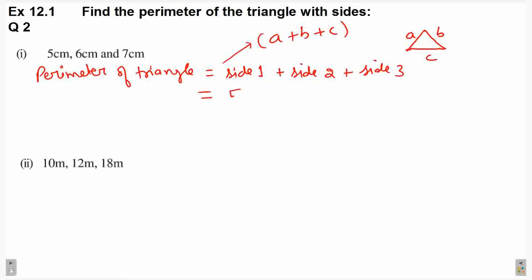Side 1 is 5, side 2 is 6, side 3 is 7. This is equal to 5 plus 6, 11 plus 7 is equal to 18 centimeter. This is your answer.